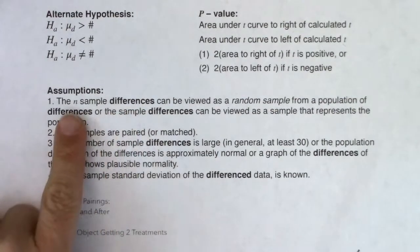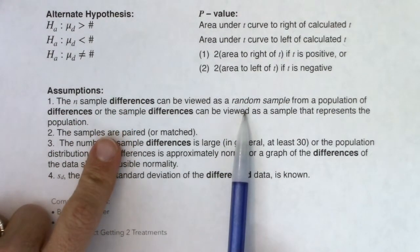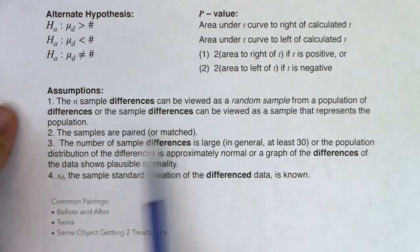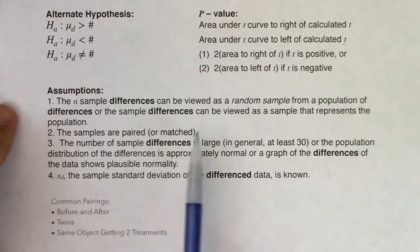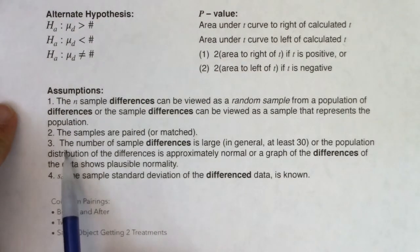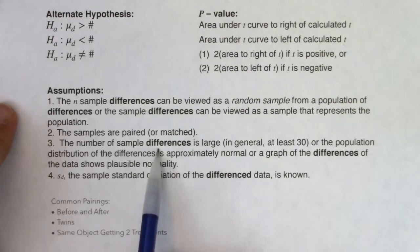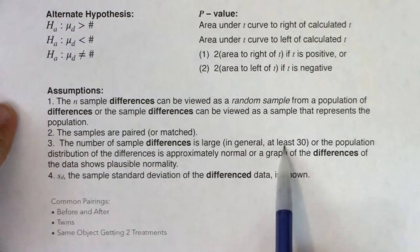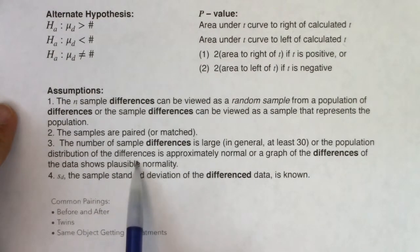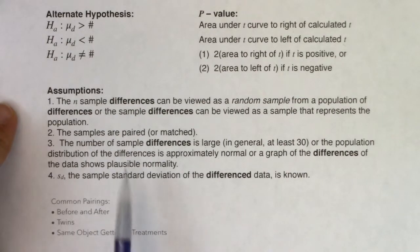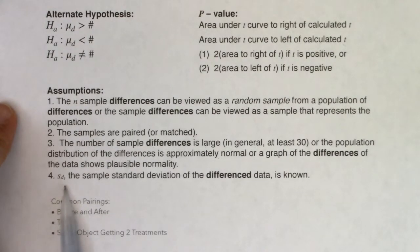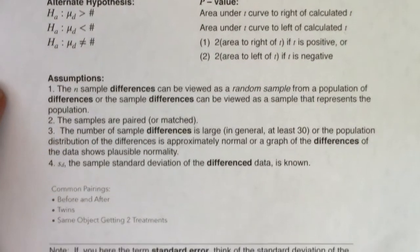We're going to take differences, and those n differences should come from a random sample — a sample that represents your population. We want to note that the pairs are paired or matched. For normality, the number of differences is large (central limit theorem says 30 or higher), or the population distribution for the differences is approximately normal, or the graph of the differences shows plausible normality. The standard deviation of the difference data should be known.